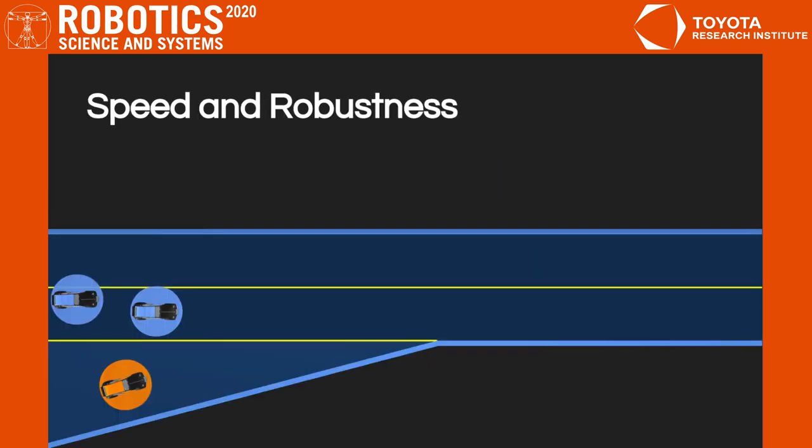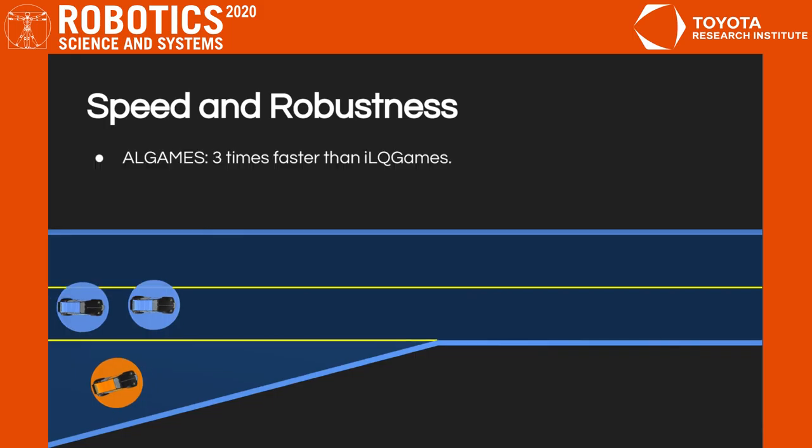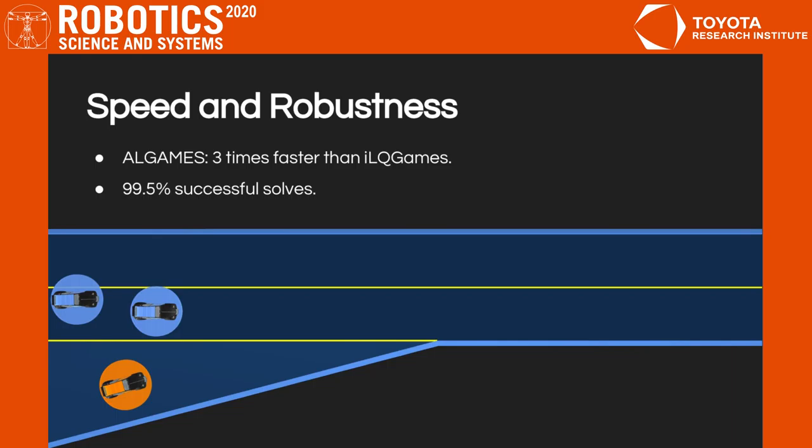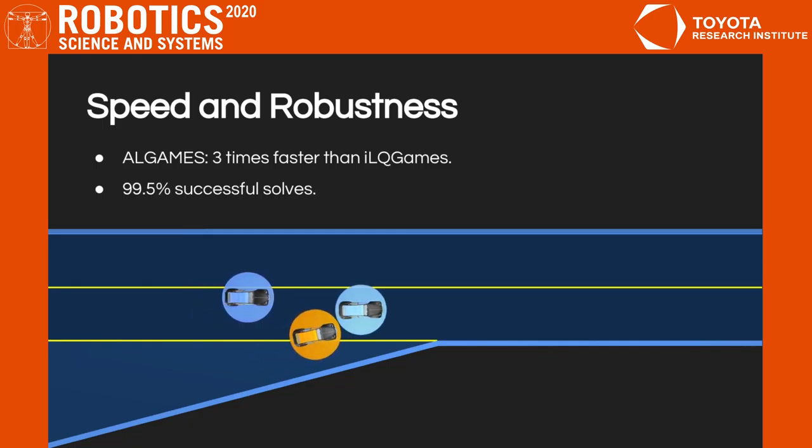We compare ALGAMES to a state-of-the-art dynamic game solver through a Monte Carlo analysis. We find that our algorithm solves dynamic games three times faster than the baseline, on average. In addition to this, in 99.5% of the cases, ALGAMES is able to find a Nash equilibrium solution that satisfies the constraints. This illustrates the reliability of our approach on autonomous driving problems.